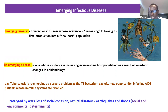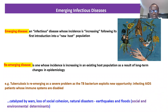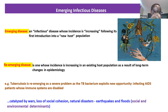Let's look at emerging infectious diseases generally, because it's a term that is very commonly used nowadays. An emerging infectious disease is one whose incidence is actually increasing following its first introduction into a new host population. A perfect example is SARS-CoV-2, the causative agent of COVID-19. The incidence has increased since it first appeared in humans, and it's believed this virus originated from bats.